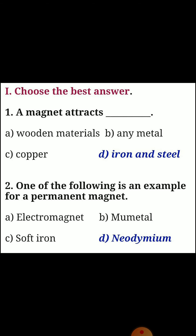First section: choose the best answer. Question one: a magnet attracts dash. Answer D: iron and steel.